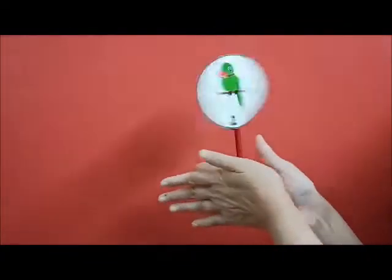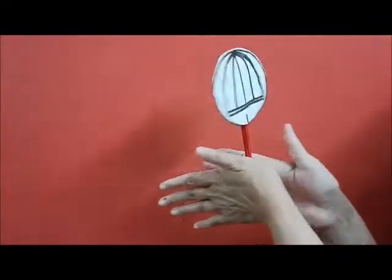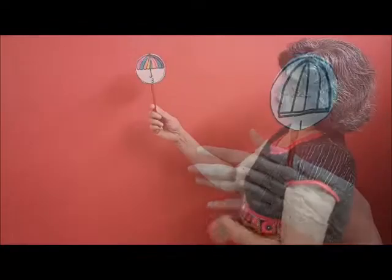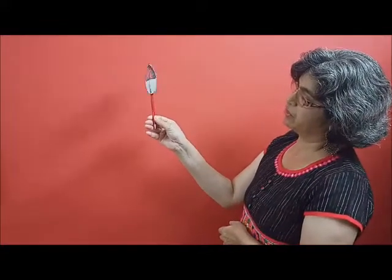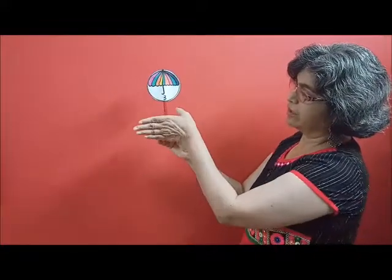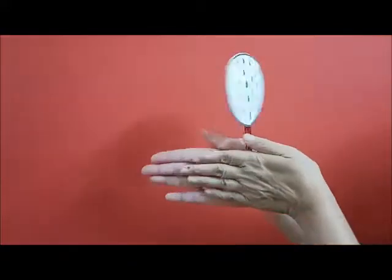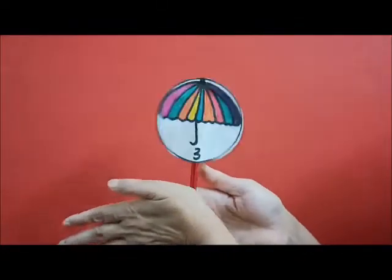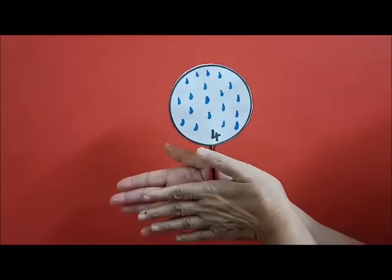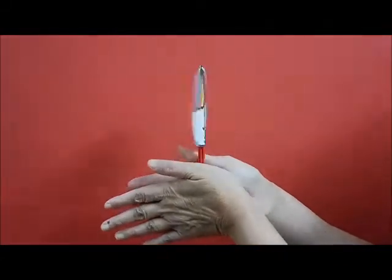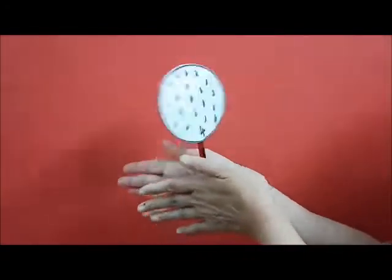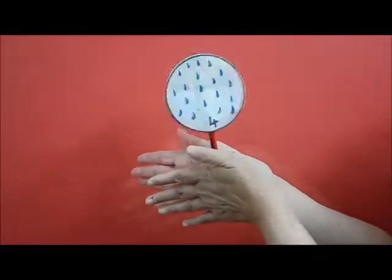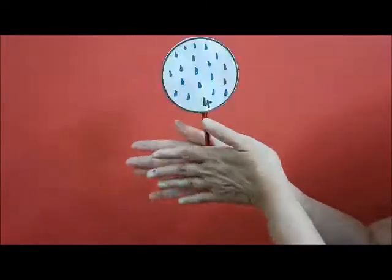You have made your own optical illusion picture. Now, let's see if picture number three and four are ready. Picture number three and picture number four are also ready. What do you have to do? Hold the pencil in between your hands. Turn it like this. The rain is here. The umbrella is here. When you turn it quickly, it looks as if raindrops are falling on the umbrella. So, your second optical illusion is also ready.